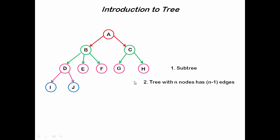Let's check for this tree. First count number of nodes: 1, 2, 3, 4, 5, 6, 7, 8, 9, 10. So total number of nodes equals 10.